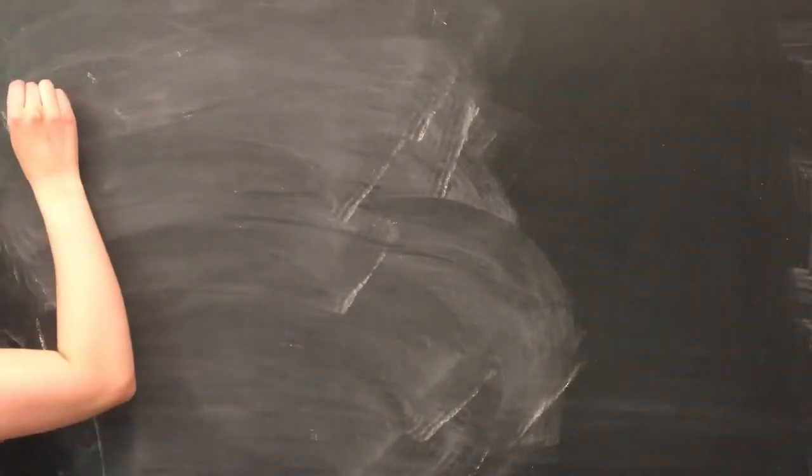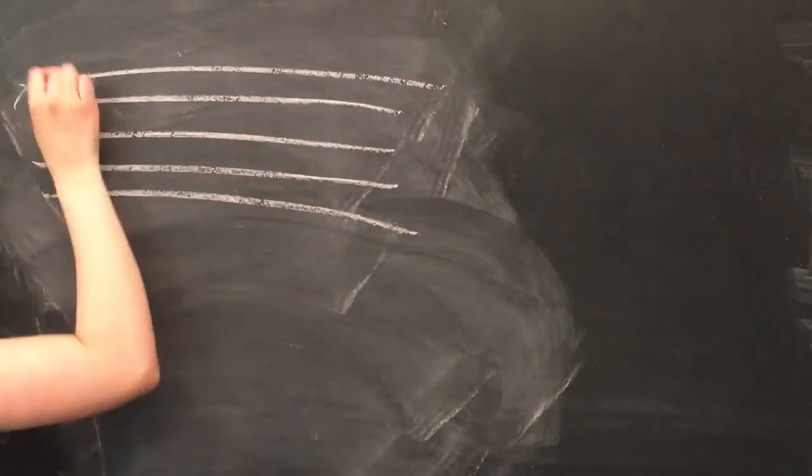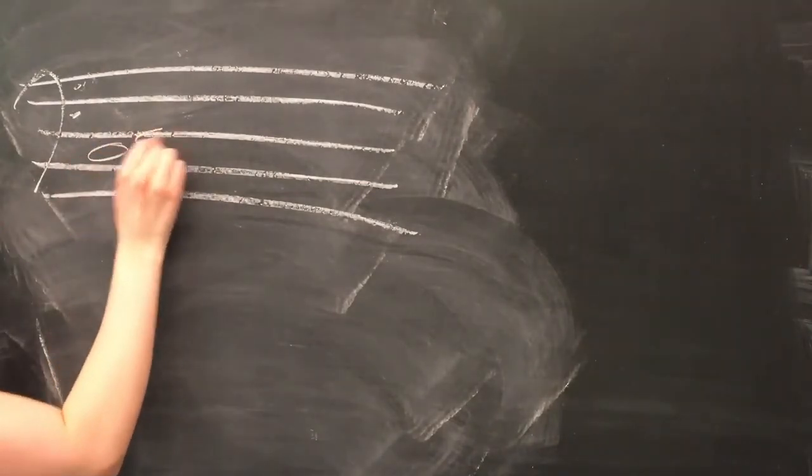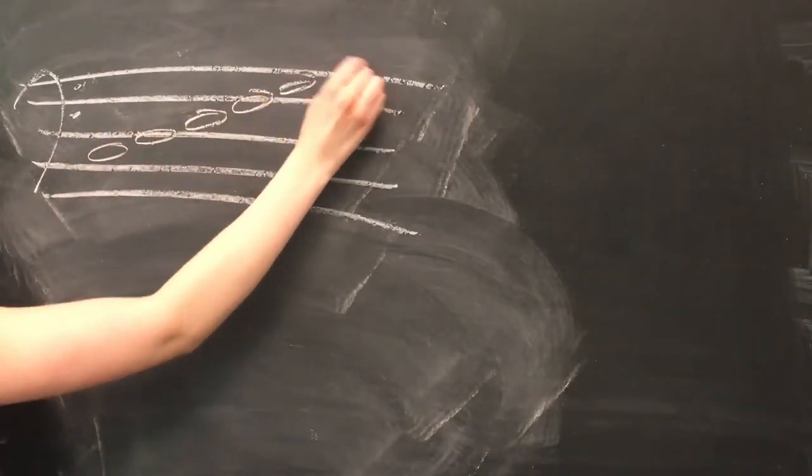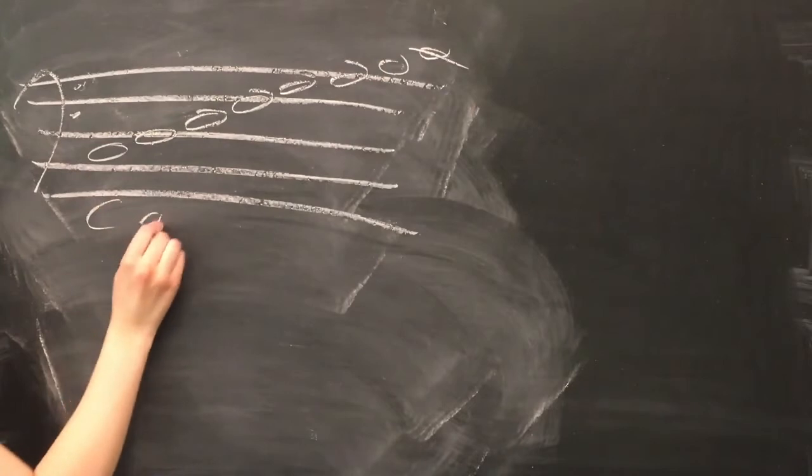Scales are just sets of notes with specific interval orderings. There are lots of different types of scales, but you're probably most familiar with the concept of major and minor scales. This here that I'm drawing is a C major scale. The series of intervals comprising the major scale is as follows.